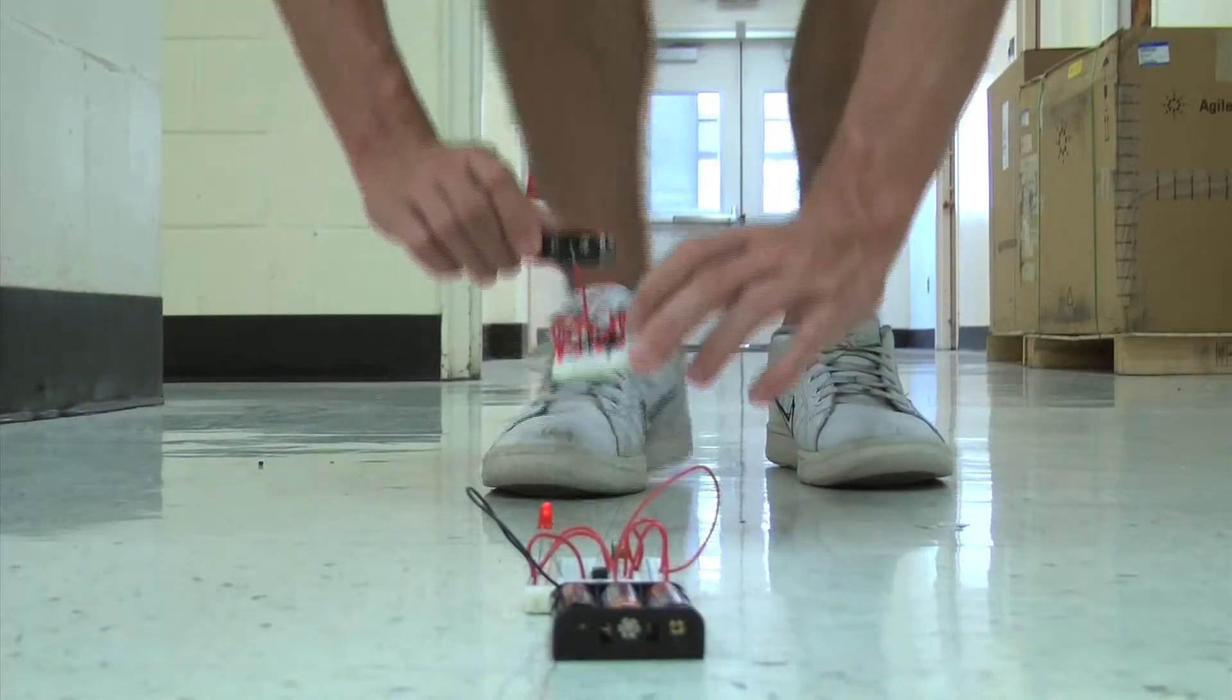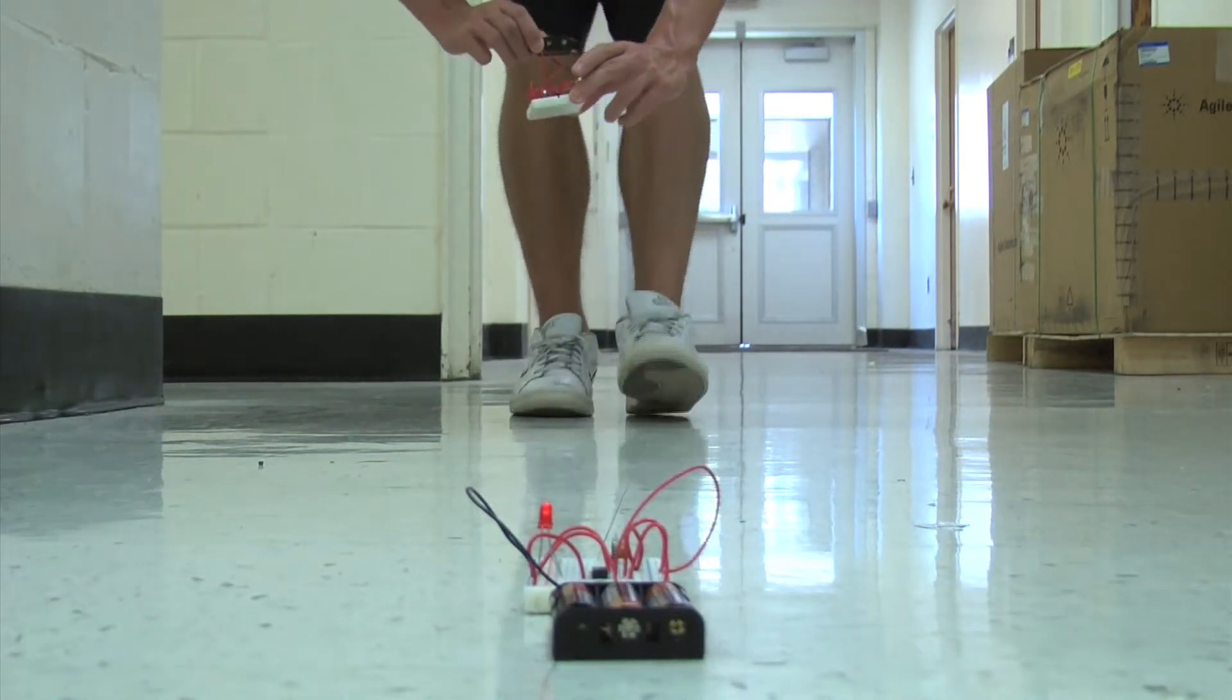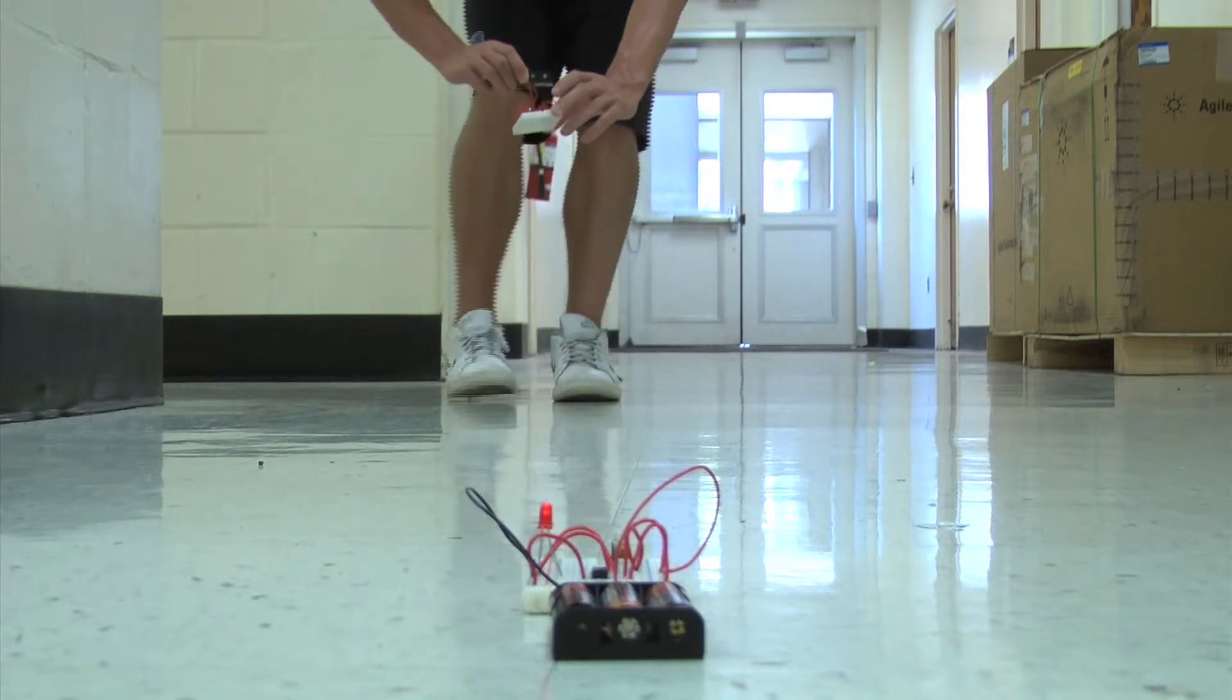Next, we demonstrate how the receiver can still receive radio signals from the transmitter without the two breadboards being in each other's line of sight.